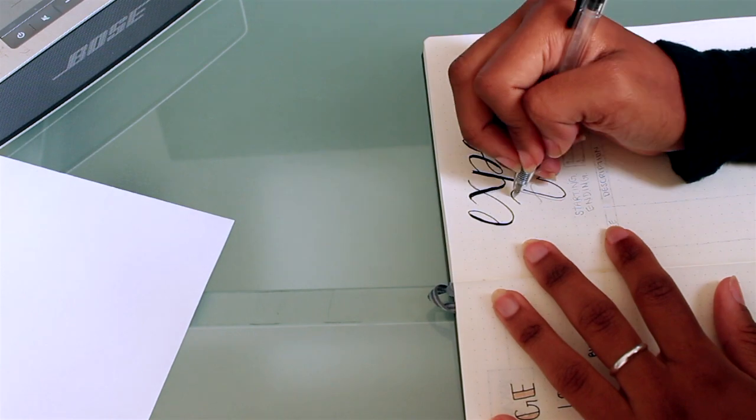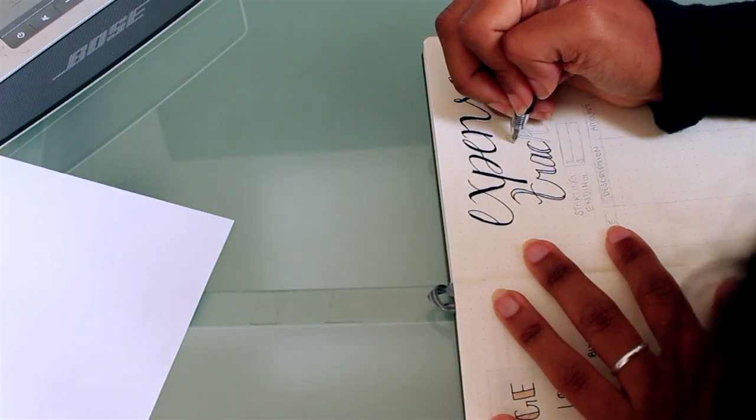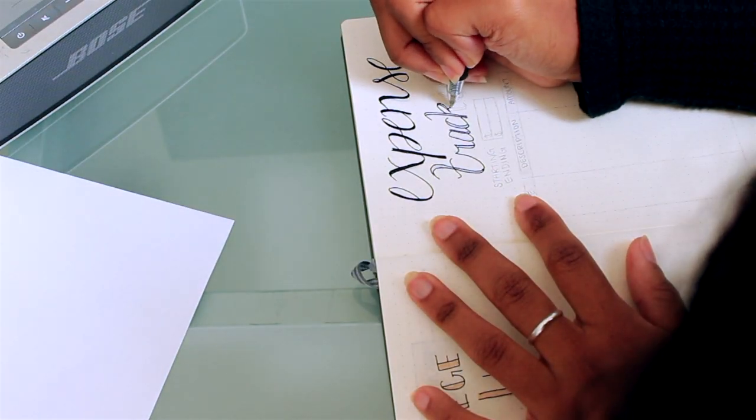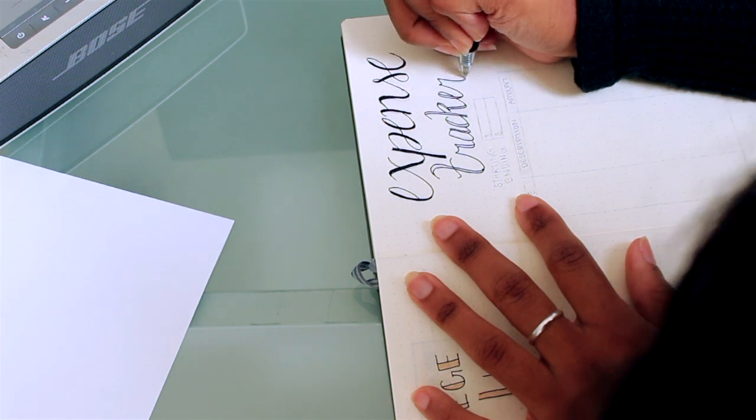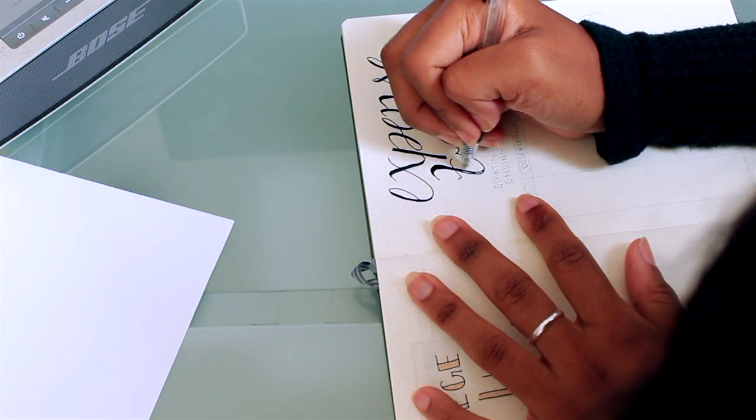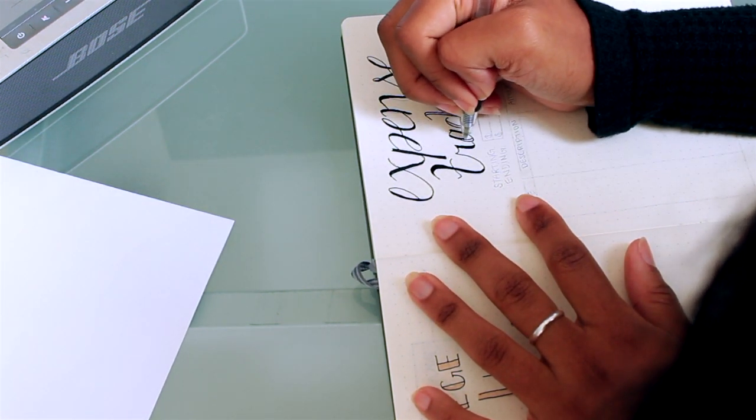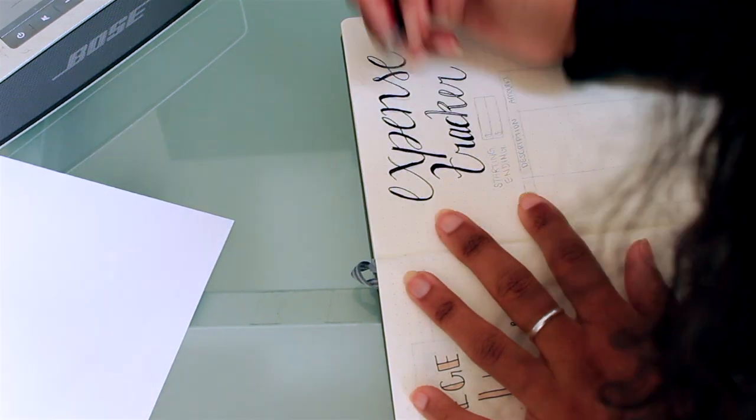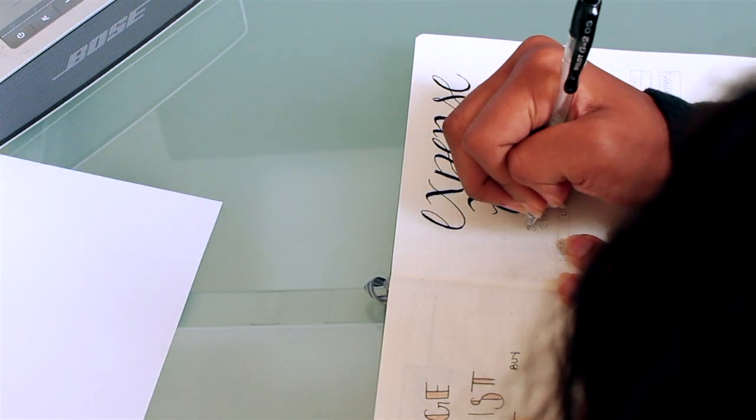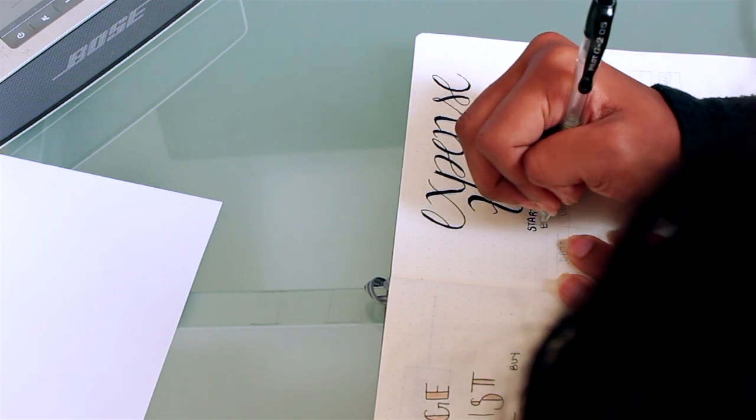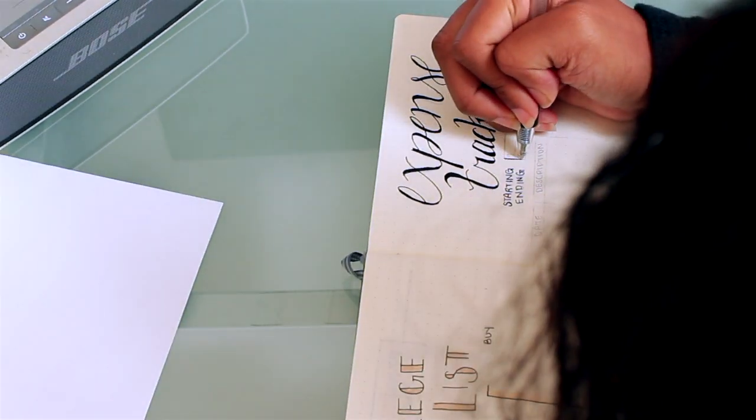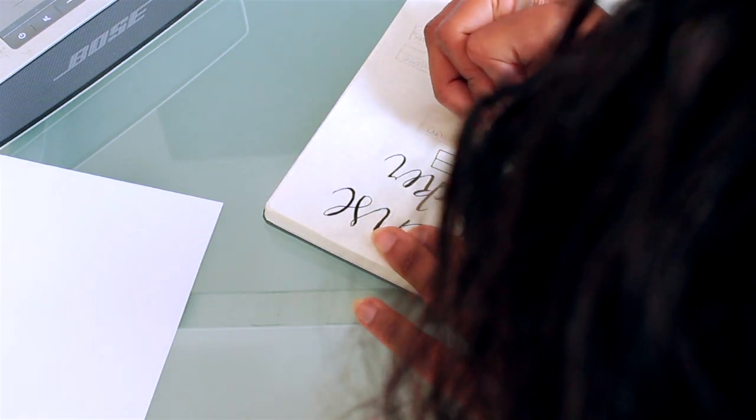On this page I have my expense tracker. This is something new, I didn't have this on my bullet journal from last month. But I thought it'd be really interesting because I really do have to start tracking my expenses because I'm trying to save up money. So I don't want to just be going crazy and buying like random things I don't need. I have at the top right here it says my starting and my ending, and that's regarding my balance, so my starting balance and my ending balance.